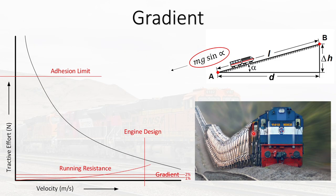The next running resistance your train experiences is gradient. Simply put, if your train is going up a gradient at a certain angle, then the force your train experiences is the gravitational component along that incline. Looking at the graph, the straight lines depict the resistance due to gradient. We then add running resistance and gradient resistance and subtract that from the previous engine curve.